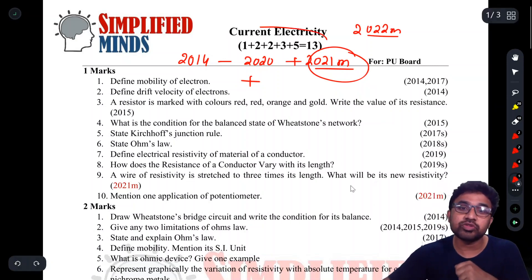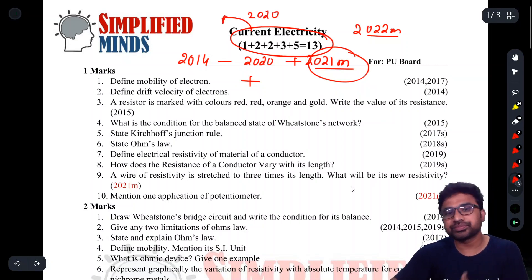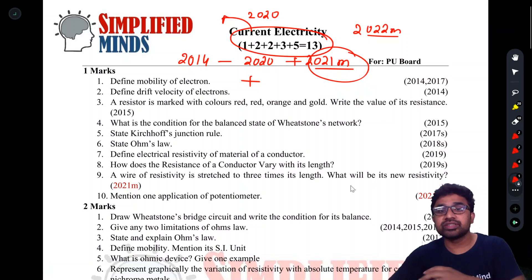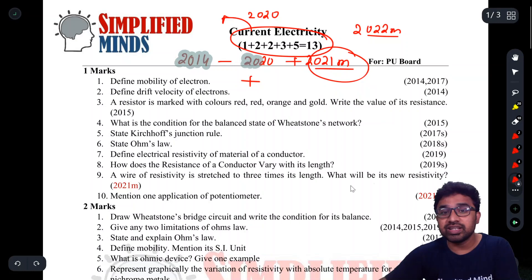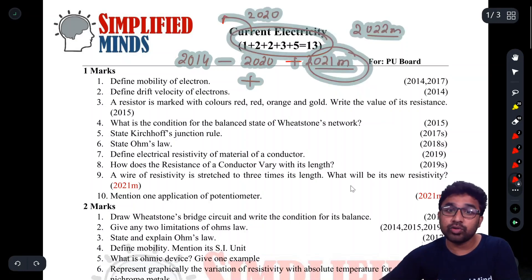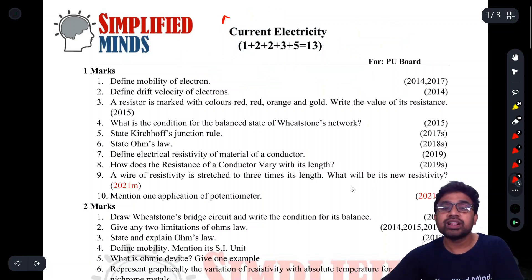This marks distribution is as per 2020. For the 2022 exam, there might be very slight variations - sometimes 14 marks, sometimes approximately 13 marks on average. These are the highest marks for this chapter in the PUC exam. This chapter is also very important for your...